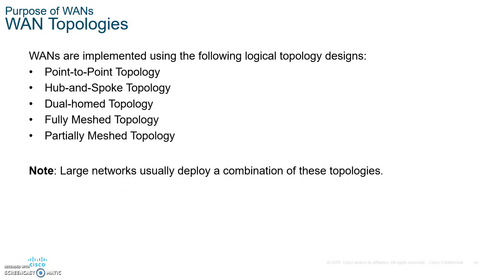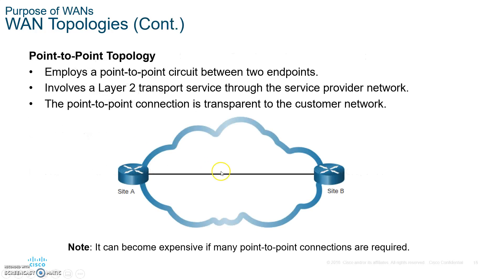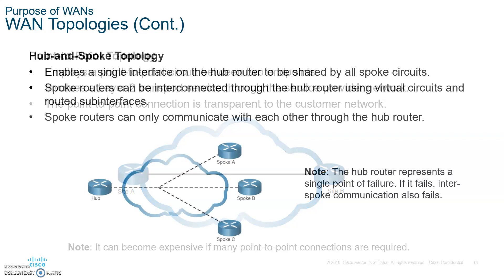Looking at the different types of WAN topologies: you have point-to-point, hub-and-spoke, dual home, fully meshed, and partially meshed — write these down. Point-to-point can be over the internet or over a private network in the cloud, and site A and site B will appear as if they are directly connected to each other. We've been simulating point-to-point topologies in our labs when we connect routers directly to each other, which we did with static routing and OSPF.